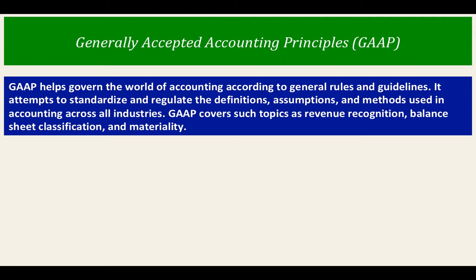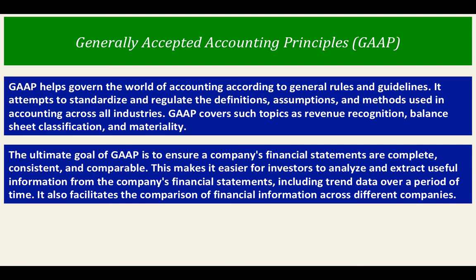GAAP puts certain rules and regulations so that financial statements of every company can be understood on the same page. A GAAP goal is to ensure a company's financial statements are complete, consistent, and comparable. This makes it easier for investors to analyze and extract useful information from the company's financial statements, including trend data over a period of time. It also facilitates the comparison of financial information across different companies.